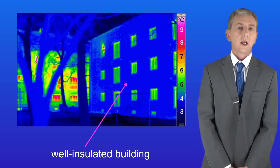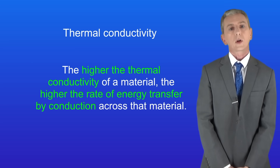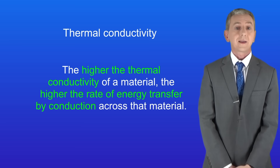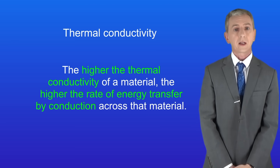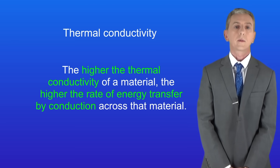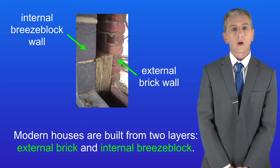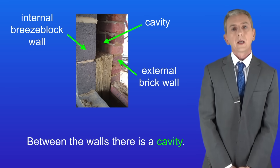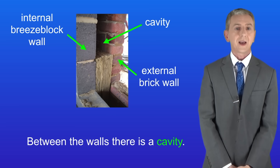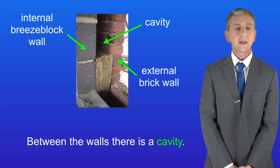Now there are two main factors. The first is the thermal conductivity of the walls. You don't need to learn the actual definition of thermal conductivity but you do need to have an idea of what it means. The higher the thermal conductivity of a material, the higher the rate of energy transfer by conduction across that material. Now modern houses are built from two layers: an external brick wall and then an internal breeze block wall, with a cavity between the walls. The thermal conductivity of walls built like this is actually fairly high, which means that a lot of thermal energy can transfer out of the house.